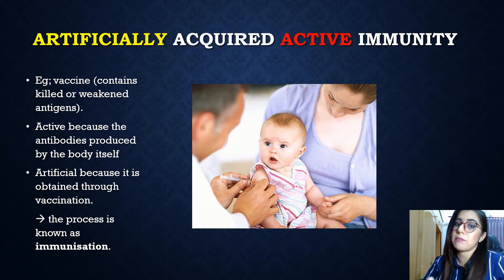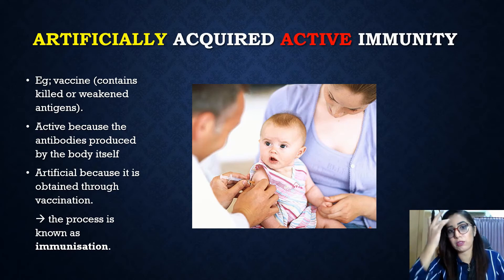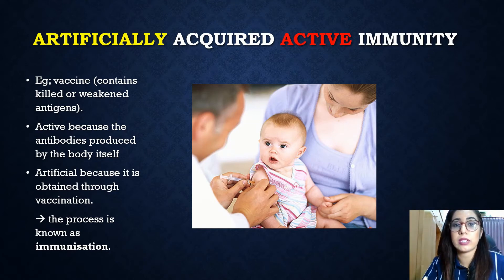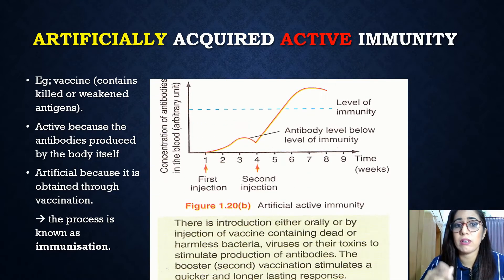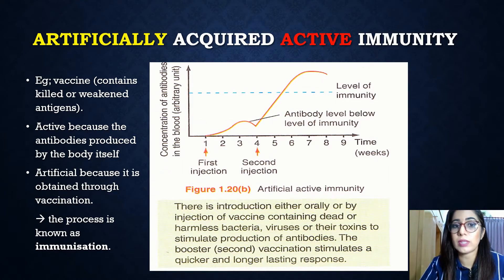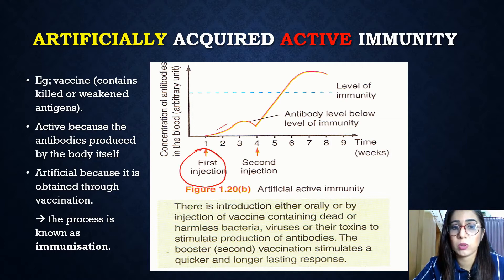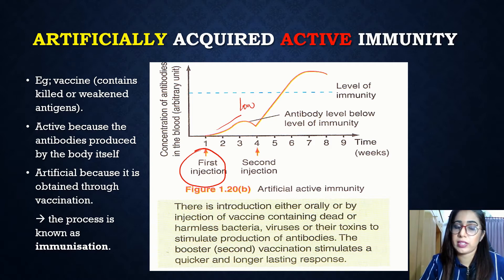A vaccine is a suspension of pathogens that are weakened, dead, or non-virulent — they are not harmful to the body. When the vaccine is injected into the body, it stimulates the lymphocytes to produce antibodies to fight the pathogens. Looking at the graph, the first vaccine injection usually results in low antibody production — very low.